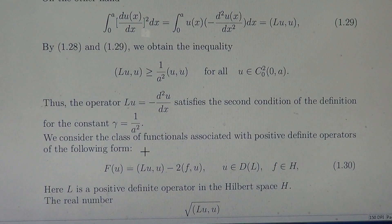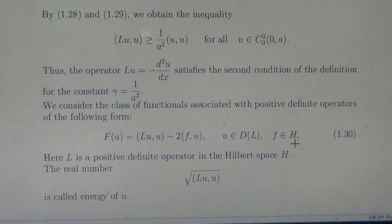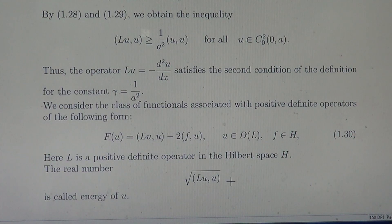Later on, we shall consider the functional associated with positive definite operators of the following form. If we have a positive definite operator L, we consider the functional F(U) equals LUU minus 2FU, for U in D(L) and F in the Hilbert space. We note that this positive operator L generates the quantity square root of LUU, which in physics is called the potential energy of the element U.